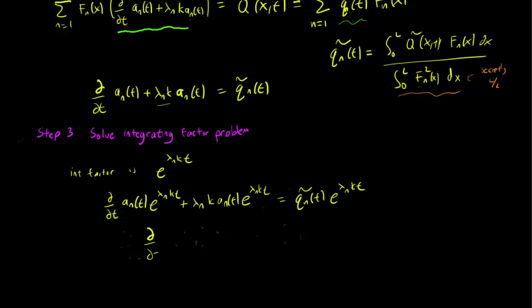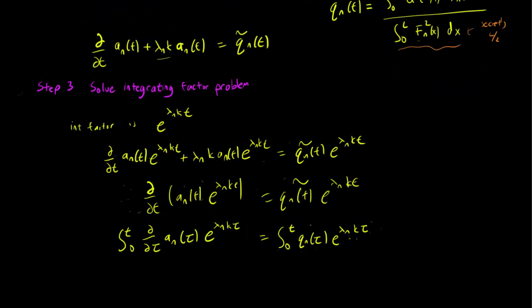We multiply each side of the equation by e^(lambda_n*K*t). And this simplifies to d/dt of [a_n(t)*e^(lambda_n*K*t)] equals q tilde_n(t)*e^(lambda_n*K*t).